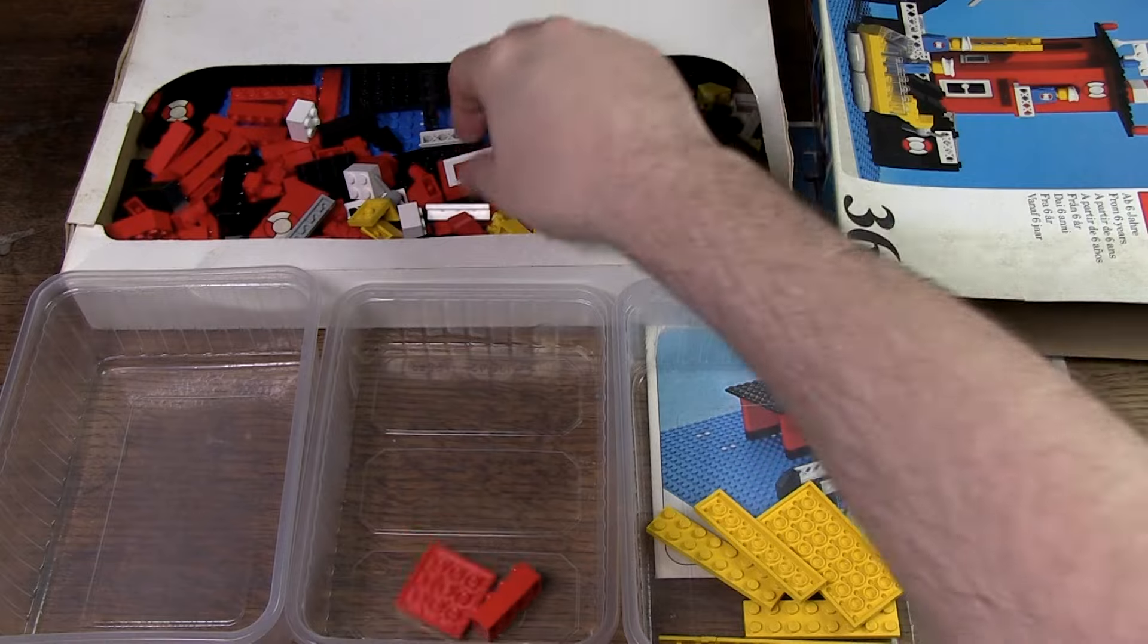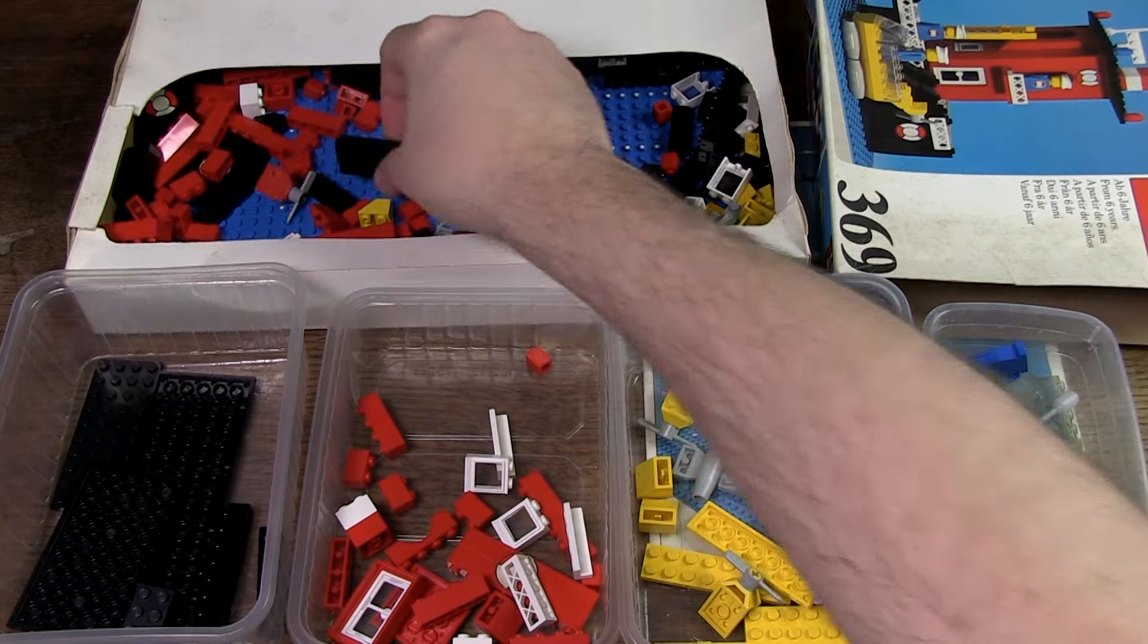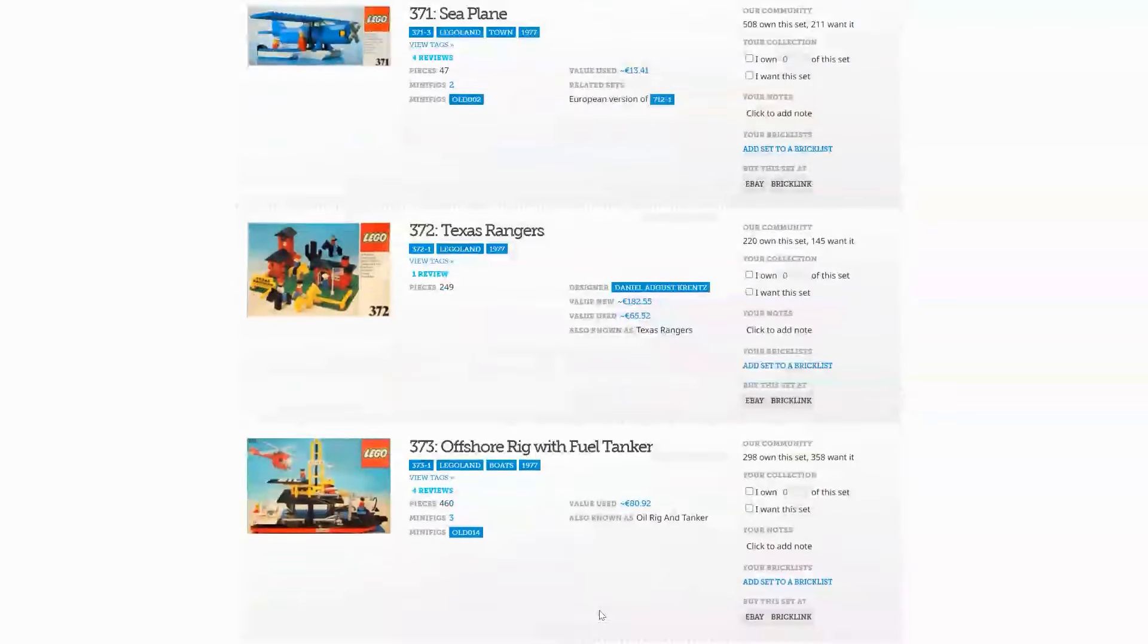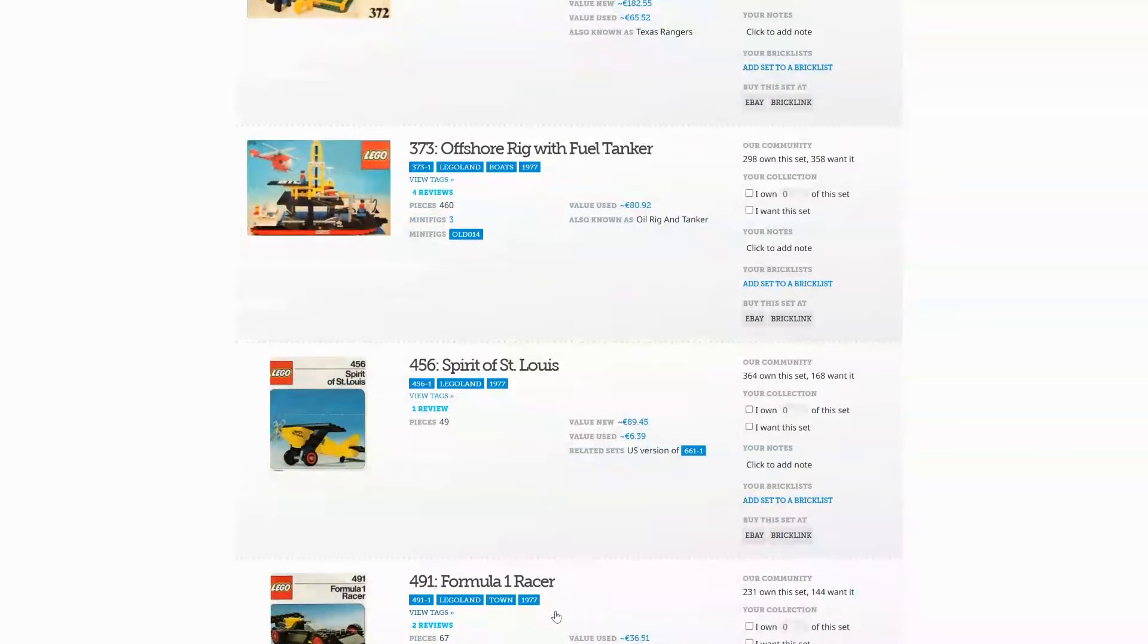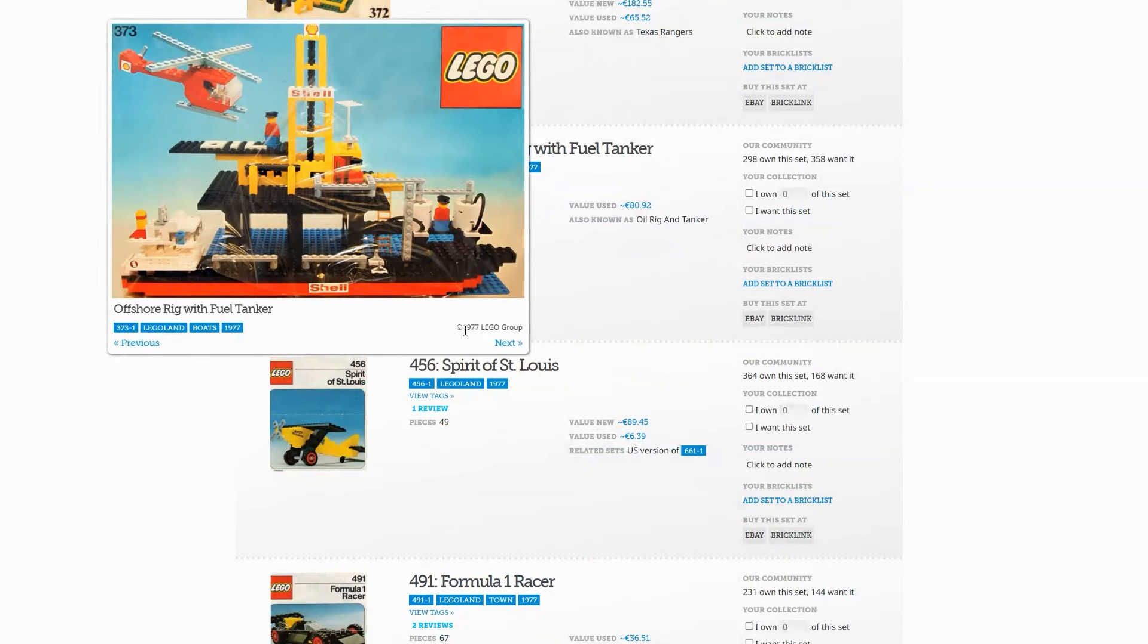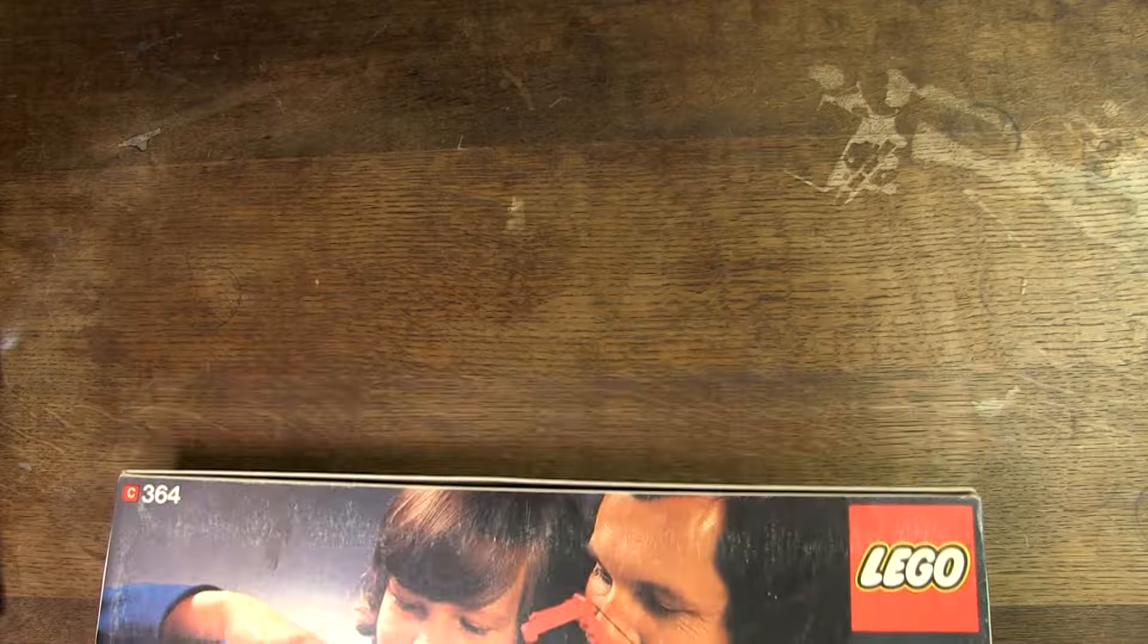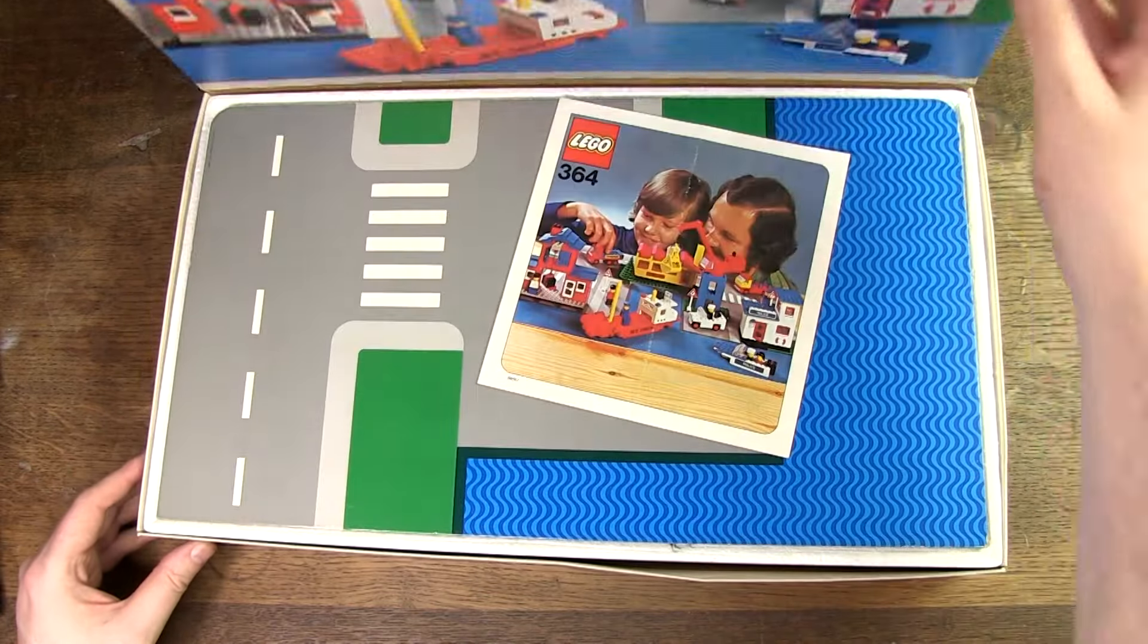I wanted this set in my collection because the theme really appeals to me. It's a combination of water and land and that is quite unique, especially in the 70s. During my research I found only two other sets in that period that combine water and land. In 1977 there was set 373, offshore rig with fuel tanker. And set 364, harbor from 1975. And that is a set that I also have in my collection and will make a review about soon.